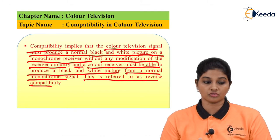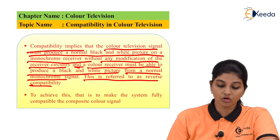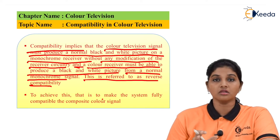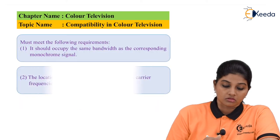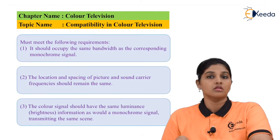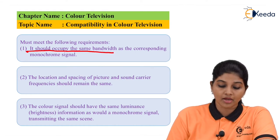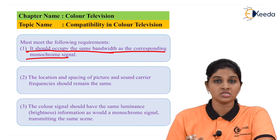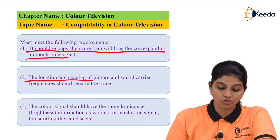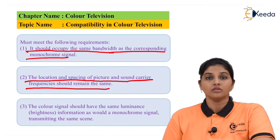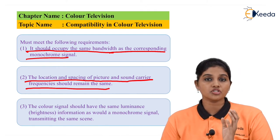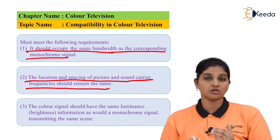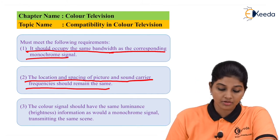Reverse compatibility indicates that the color receiver must be able to produce a black and white picture whether it receives a black and white or a color signal. In order to make the system fully compatible, certain factors are required. The first parameter is bandwidth — it should occupy the same bandwidth as the monochrome signal. The next parameter is the location and spacing of the picture and sound carrier frequency, which should remain the same.